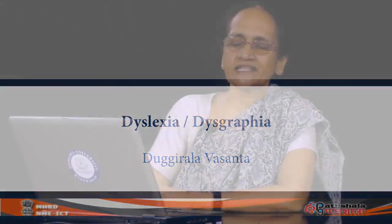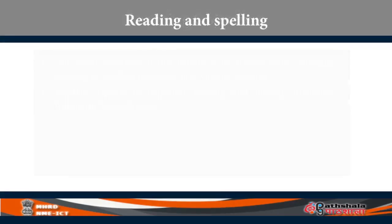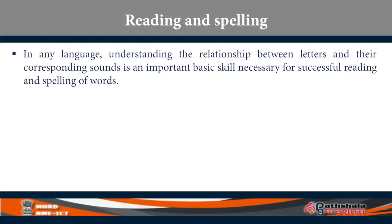They are also referred to as alexias and agraphias, but dyslexia is more commonly used. The main objective of this lecture is to discuss some concepts relating to reading processes and writing systems, and secondly, to talk about acquired reading and writing disorders following brain damage. In any language, understanding the relation between letters and their corresponding sounds is an important basic skill necessary for successful reading and spelling of words.